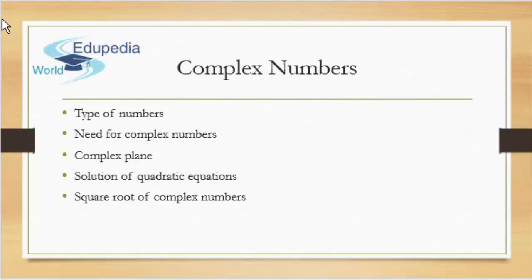Once we're done with that, we come to the solution of quadratic equations. The main reason we even have complex numbers is because of quadratic equations — when we are not able to solve quadratic equations, we come up with complex numbers to solve them. In the end, we'll come to the method of finding the square root of complex numbers. Don't be overwhelmed by anything I say right now; we'll go through this step by step in 15-minute videos.